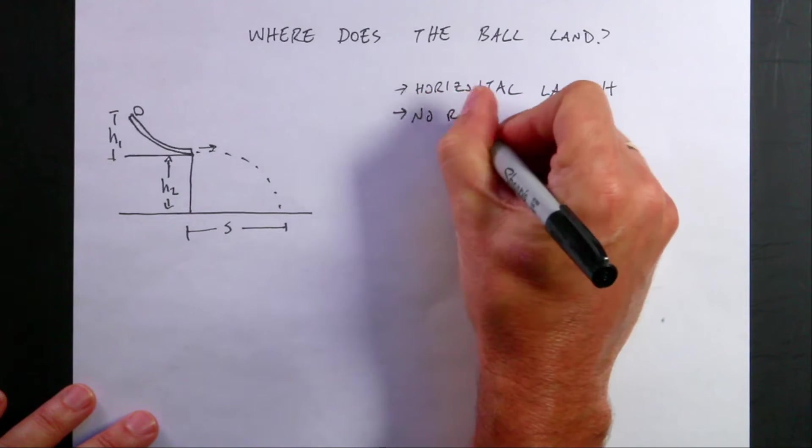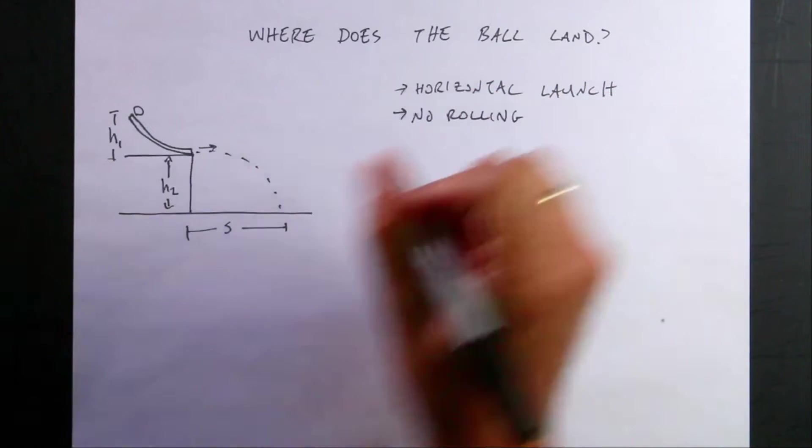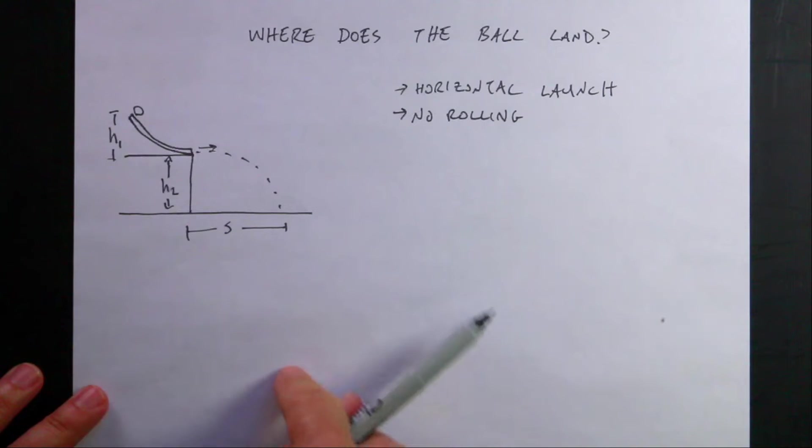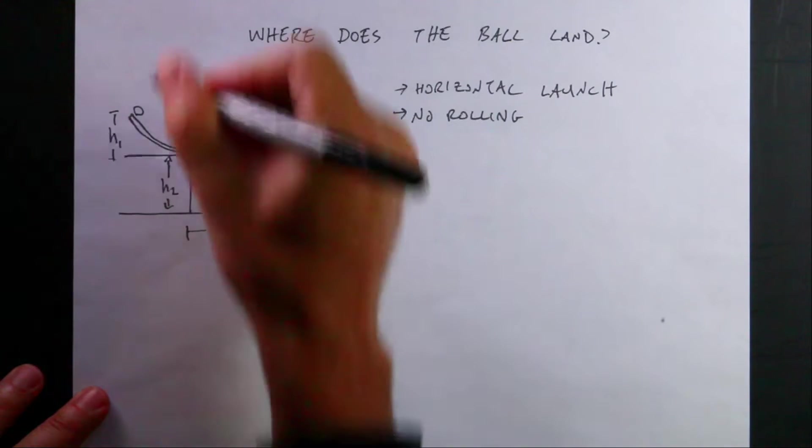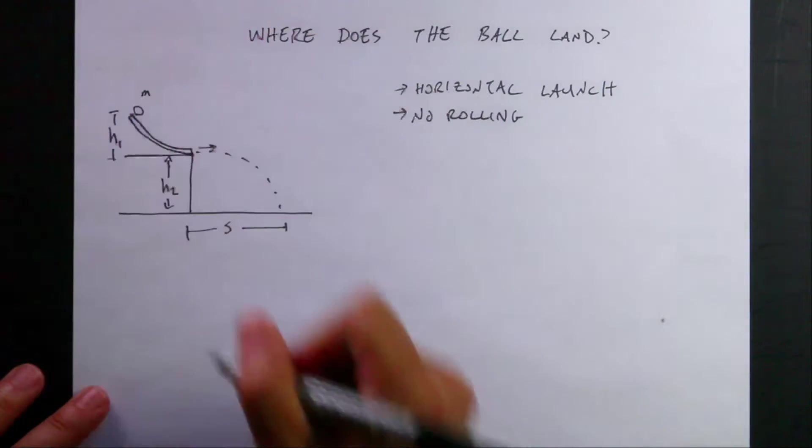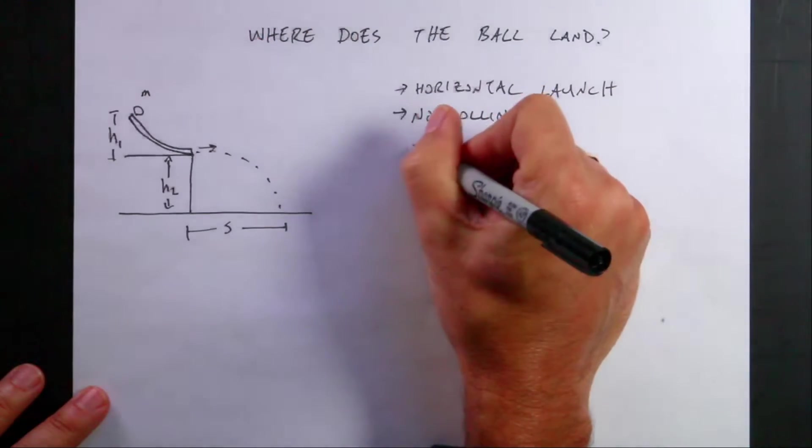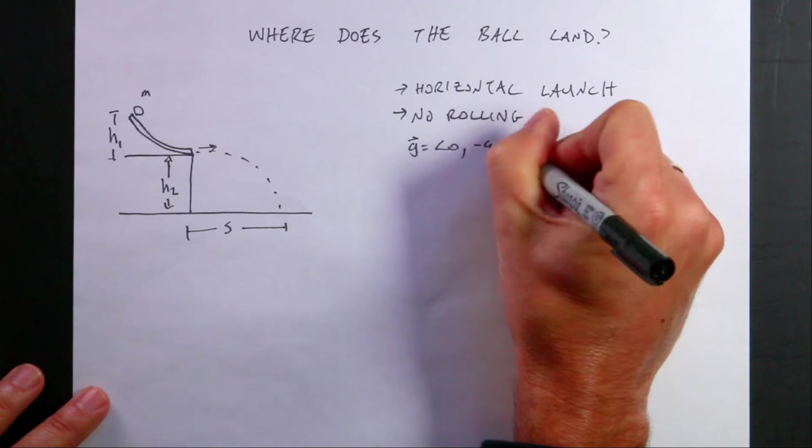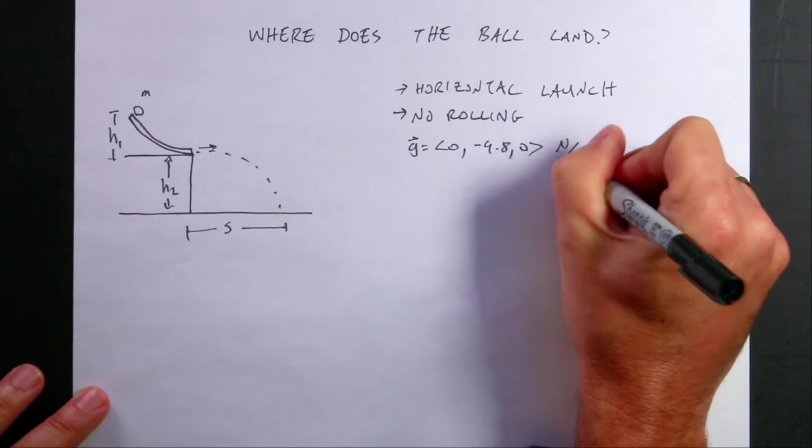Number two, no rolling. I'm assuming that the ball slides down here, and I think that's the way most of the problems want to be solved. I will make another video in which I assume the ball is rolling and not sliding. Okay, so we're going to assume it's just sliding. If you want to pick a mass, we have the mass m. We have the gravitational field g equals negative 9.80 newtons per kilogram.